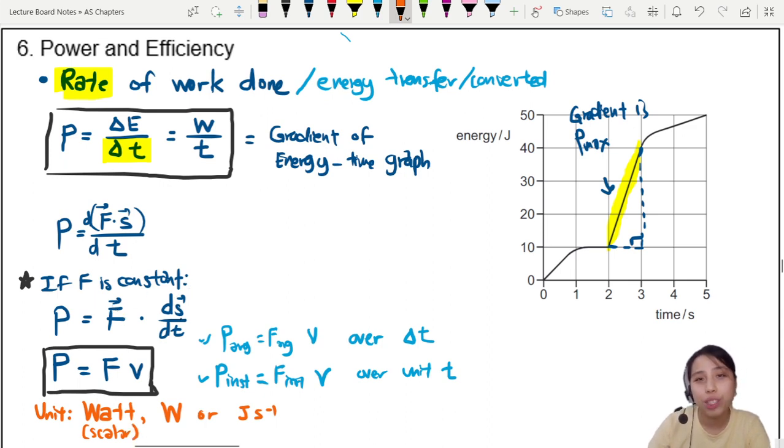And this is, by the way, a scalar quantity. We don't have direction already. Although force and displacement got direction, but when you dot two vectors together, there's no direction in the end for power. We just say, got power, power, don't care power to which direction.